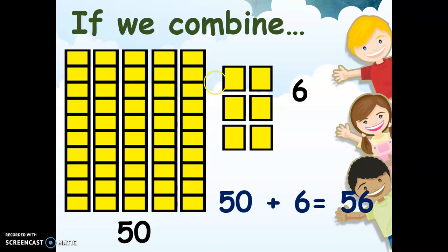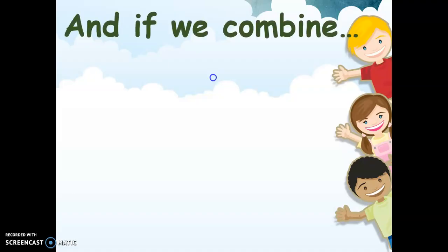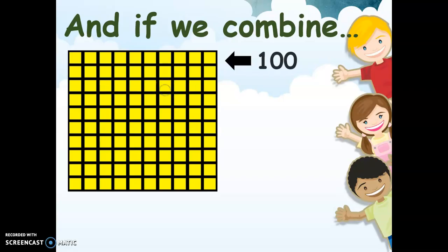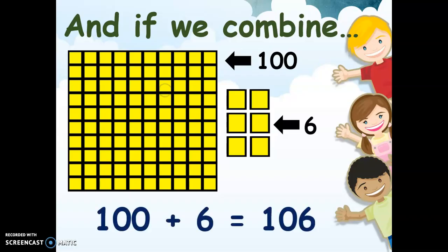Very good. And if we combine — what do you call this? This is a flat. How many blocks do we have in a flat? Very good — 100. So if we have 100 blocks plus 6 units or 6 blocks, then we have 100 plus 6 equals 106.